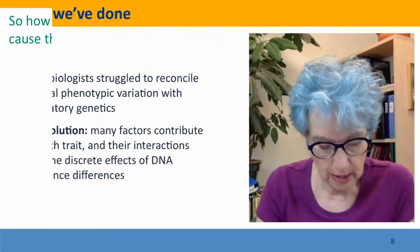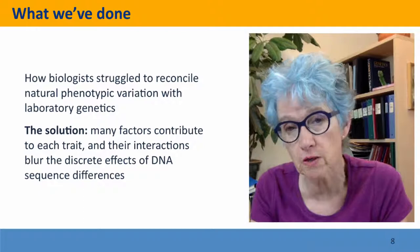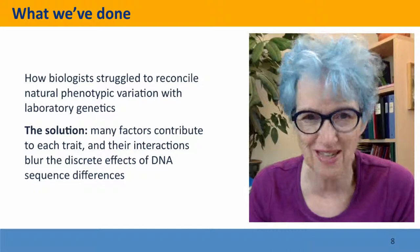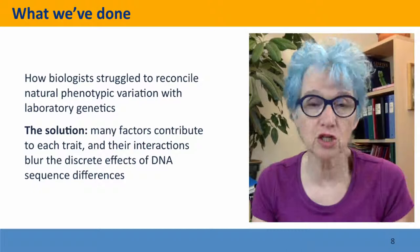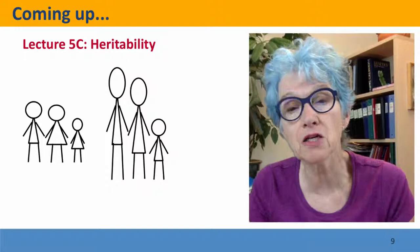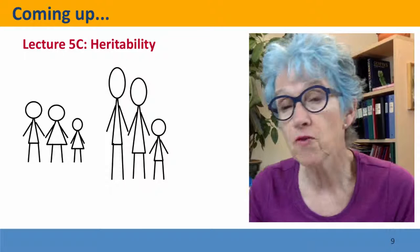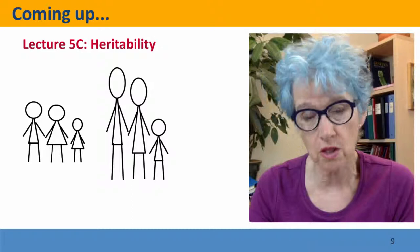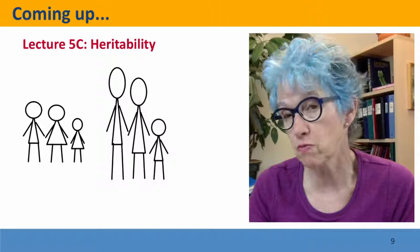So, we've discussed how biologists struggled to reconcile natural phenotypic variation with laboratory genetics. On one hand, they had very solid observations of populations; on the other hand, laboratory genetics was beautiful science. The solution: many factors are contributing, and their interactions blur the discrete differences, so that we get smoothly varying phenotypes from discrete DNA sequence differences. Coming up next, before we can think about how genetic differences cause phenotypic differences, we have to address the question of heritability — how much of the phenotypic differences we see is actually due to DNA sequences, since some will be due to environmental effects and chance. We'll talk about that in the next lecture.